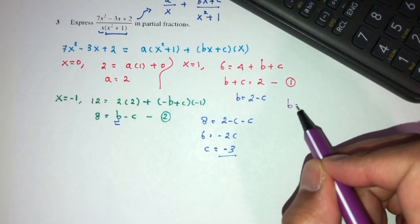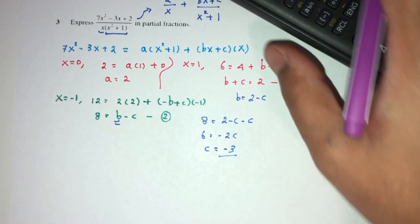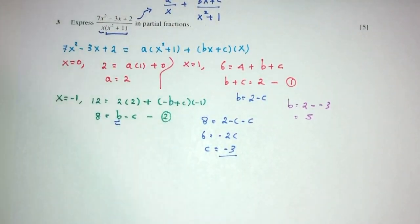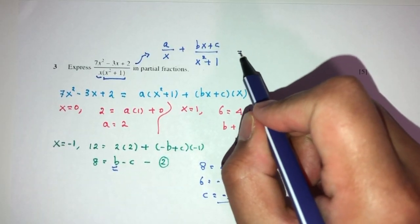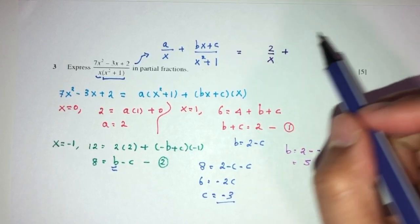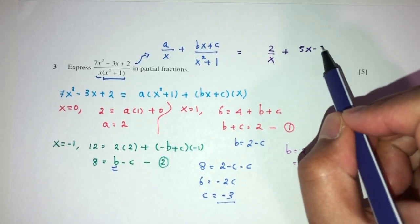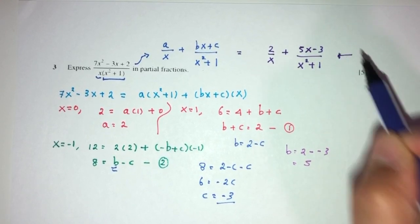From this, b will have to be 2 minus minus 3. That should be 5. Okay? So, we found the values of a, b, and c. Now, we just have to replace back up here for our partial fractions. a is the value of 2. That will be 2 over x. Plus, b is 5, so 5x minus 3 over x squared plus 1. And this is your answer for question number 3.